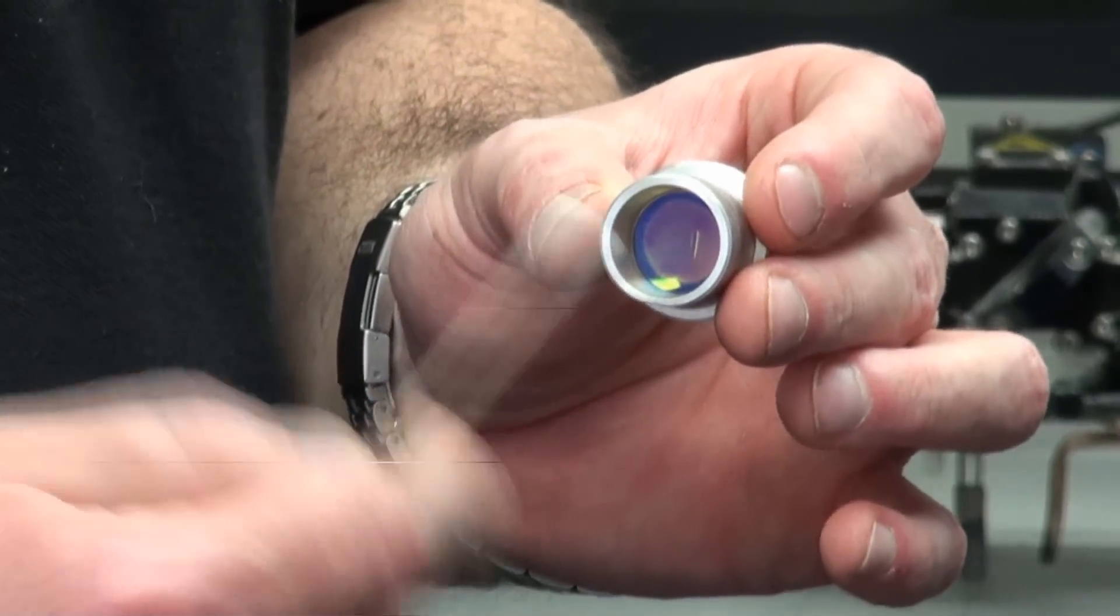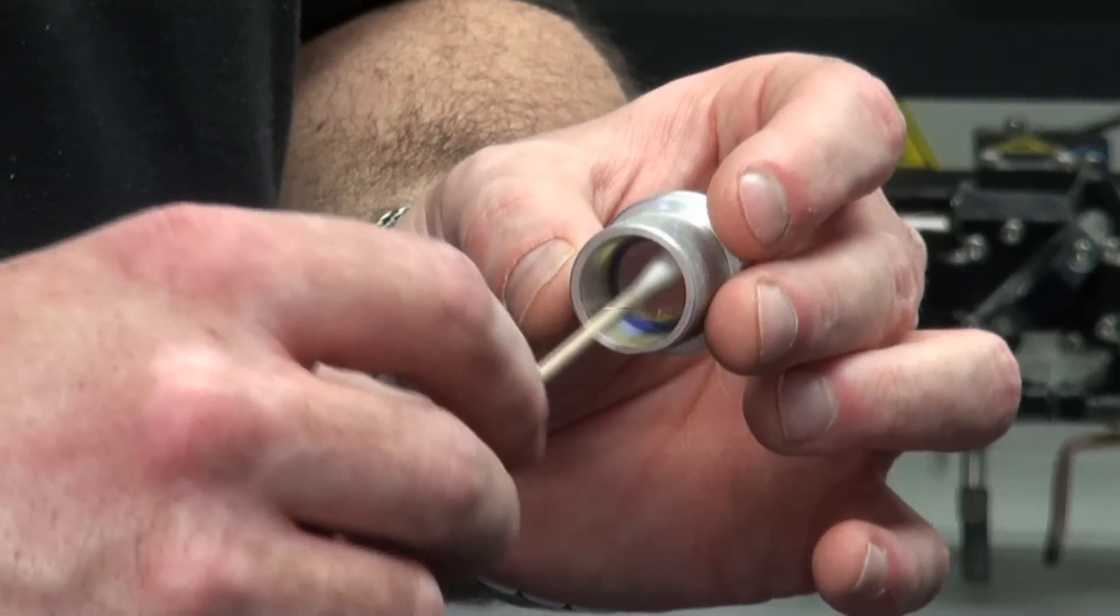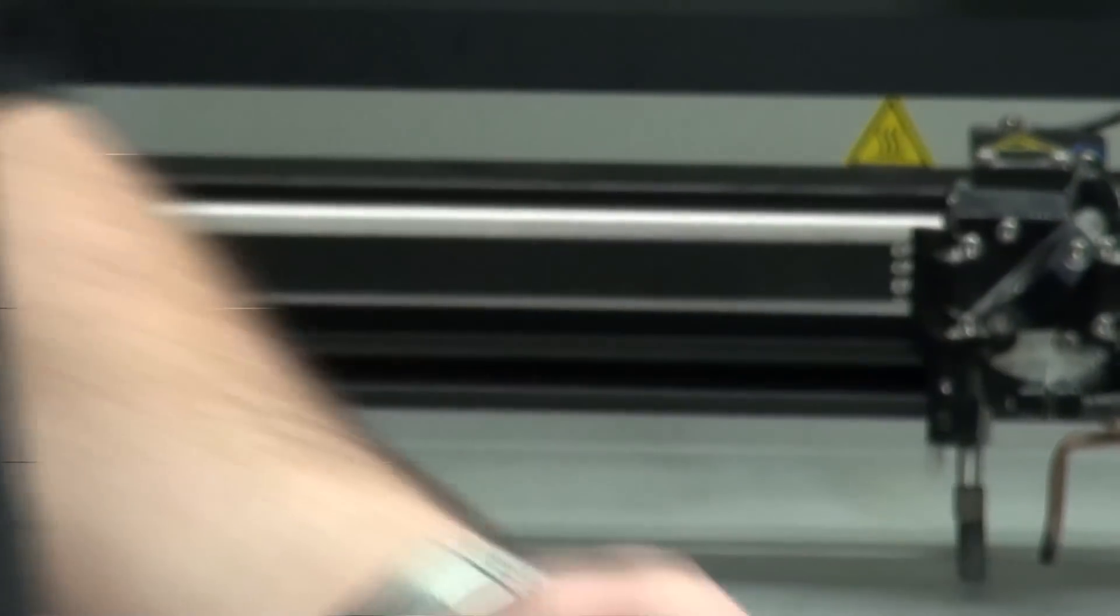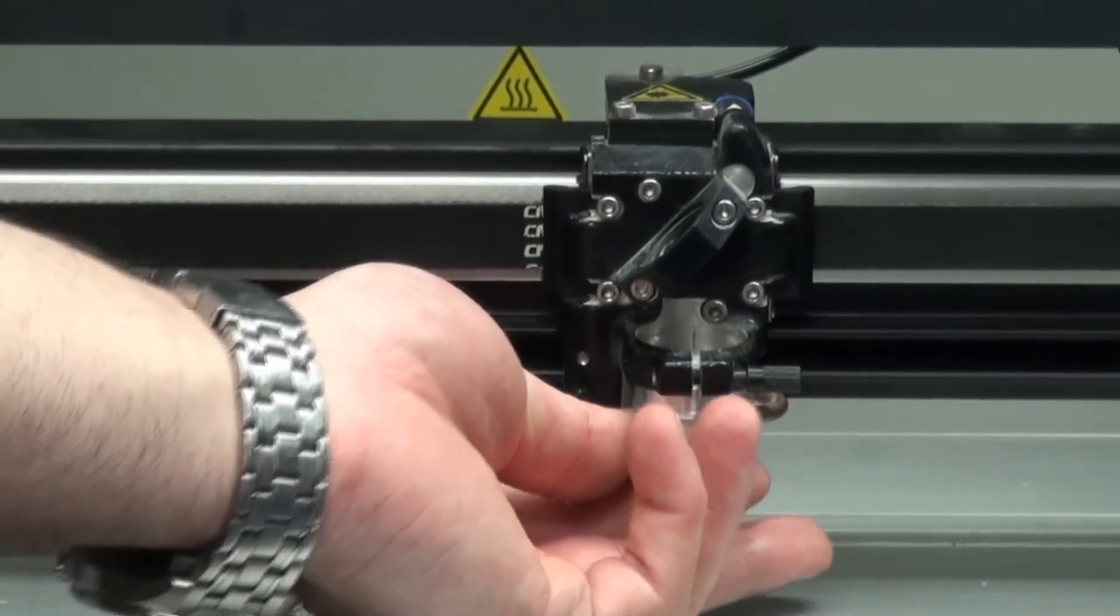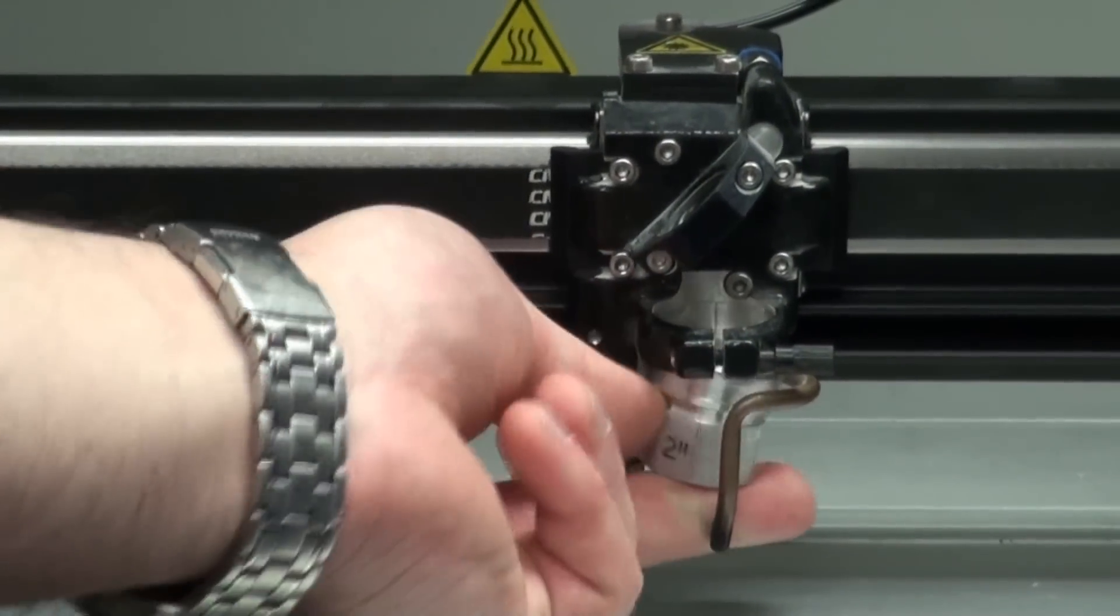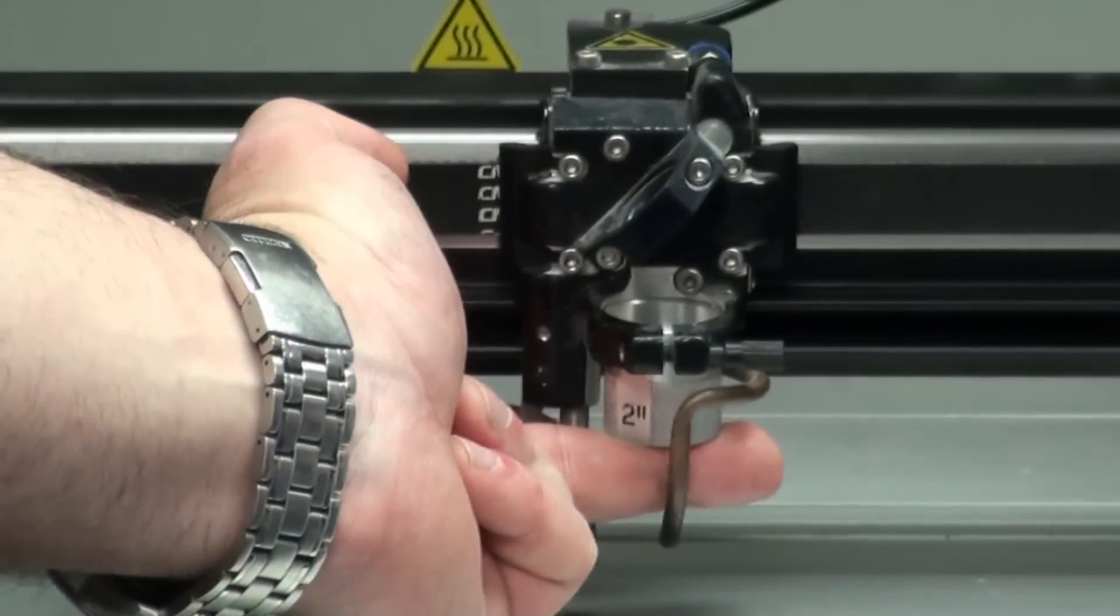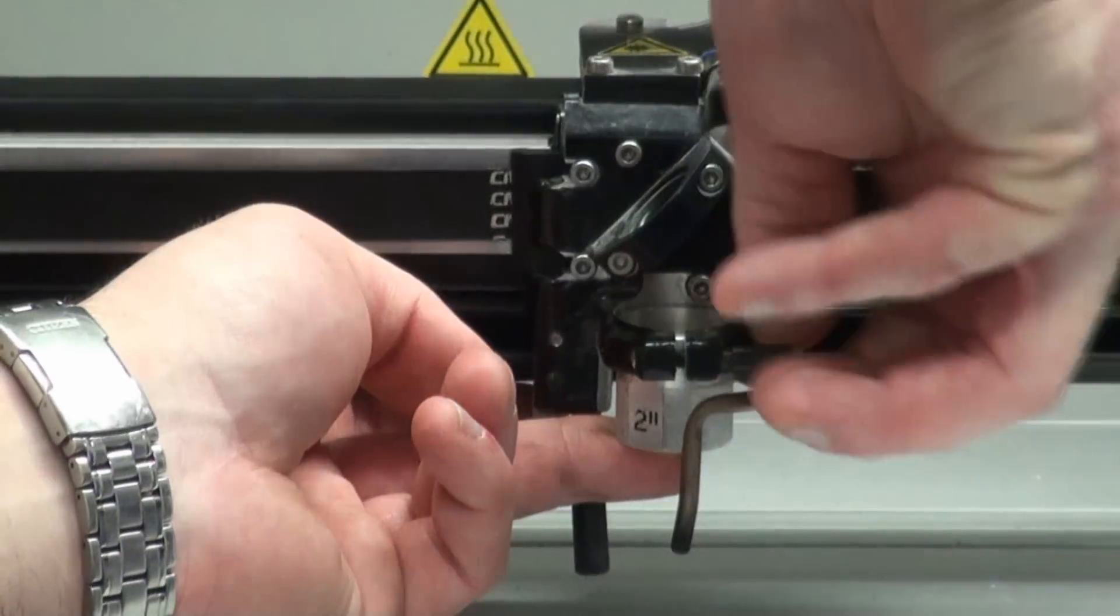Then you're going to take the dry end and go ahead and dry it up. Make sure it's dry. Once you've got that done, you'll go ahead and push it back up in here. Once it's up in there, go ahead and tighten the knob down again.